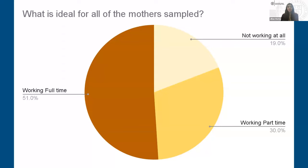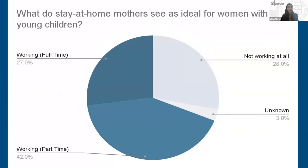According to a Pew Research Center survey of nearly 10,000 people, 81% of all mothers sampled stated that working in some capacity would be ideal. Notably, even among stay-at-home mothers — those not employed part-time or full-time — 69% responded that some level of employment would be best for mothers of young children, which is a pretty substantial gap.